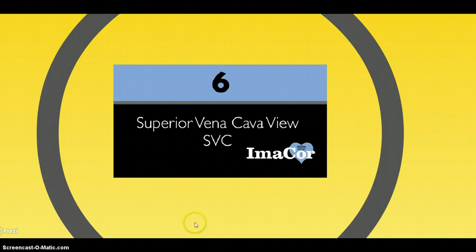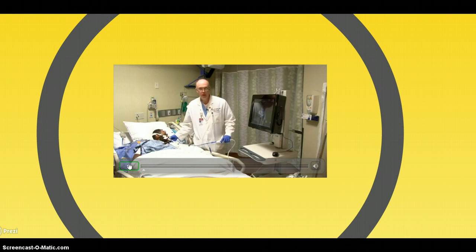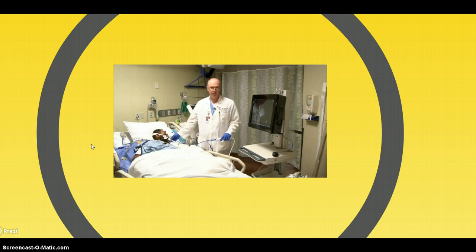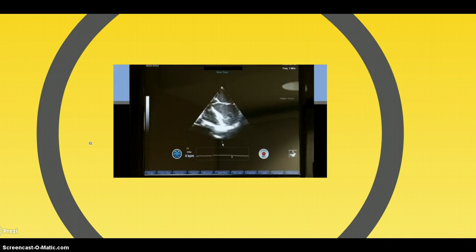Then we have a video of the vena cava superior. Now we are going to be looking at the SVC views. Again, our aortic valve is the landmark to find the SVC. I am at approximately 20 to 30 cm — usually that's where we can find the aortic valve.